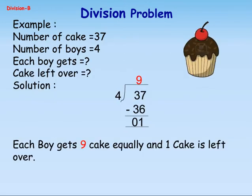Division Problem. Example. Number of cake equals thirty-seven. Number of boys equals four. Each boy gets, to be determined. Cake left over, to be determined. Solution: thirty-seven divided by four gives nine as quotient and one as remainder.